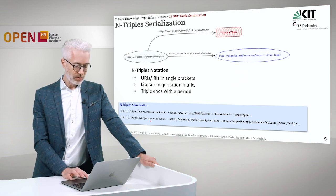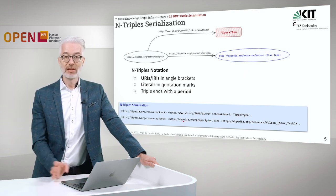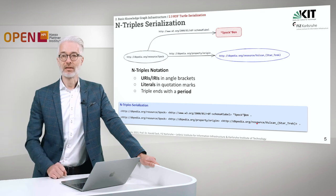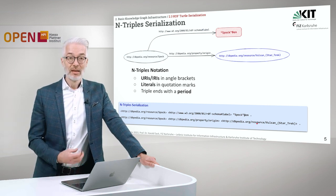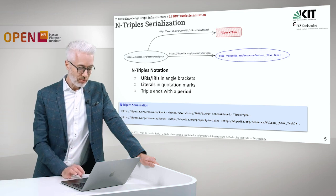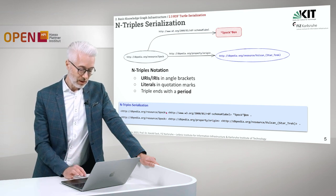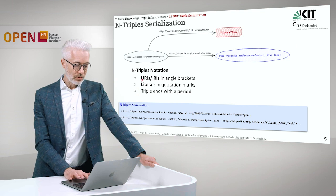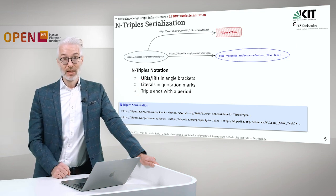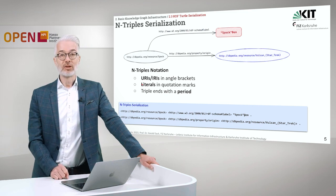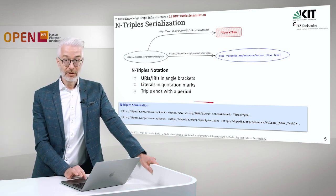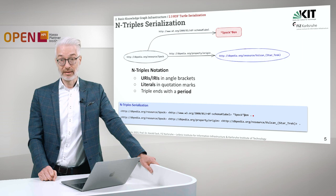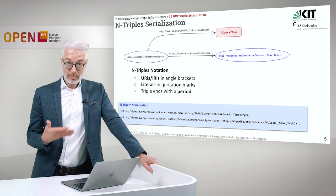The second triple gives Spock's origin — another property from DBpedia — and he comes from planet Vulcan, also a resource from DBpedia. To summarize the N-triples format: URIs and IRIs are enclosed in angle brackets, literals are given in quotation marks, and each triple ends with a period. That's a rather plain and simple format.